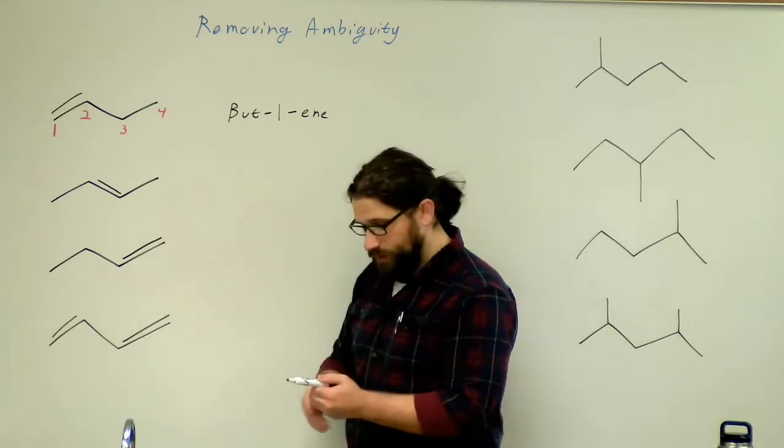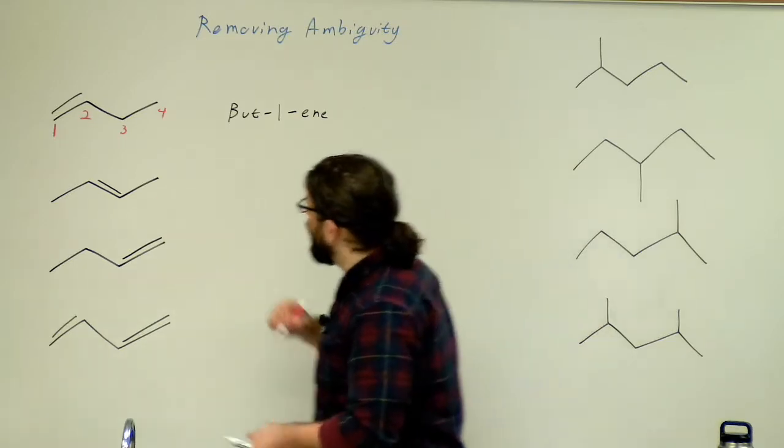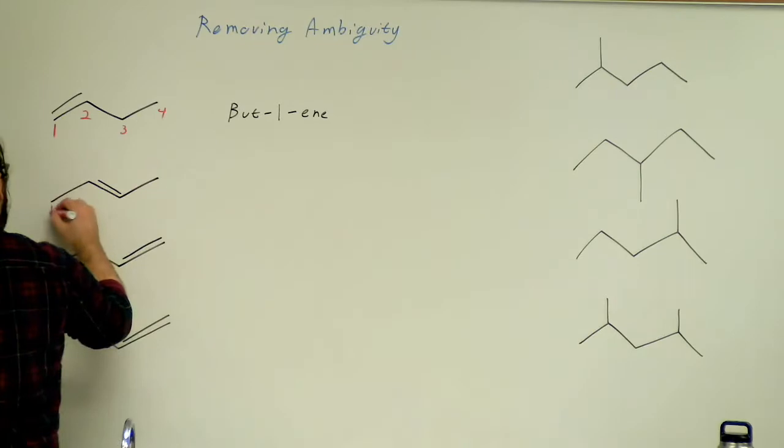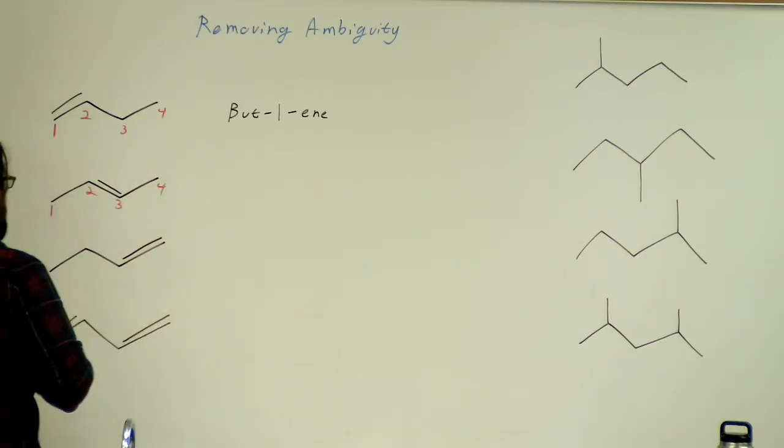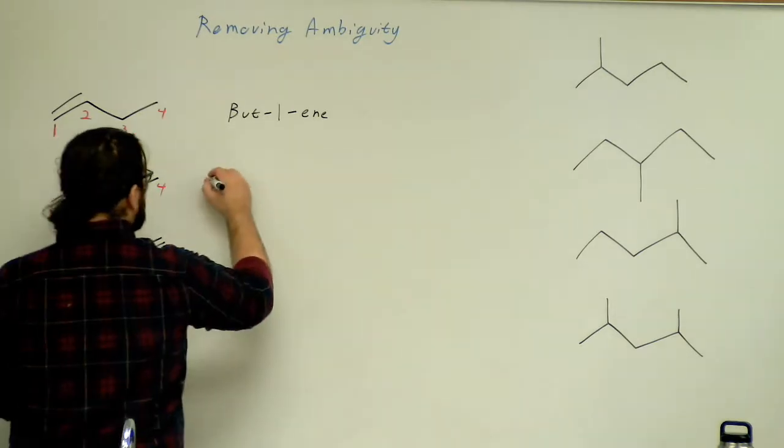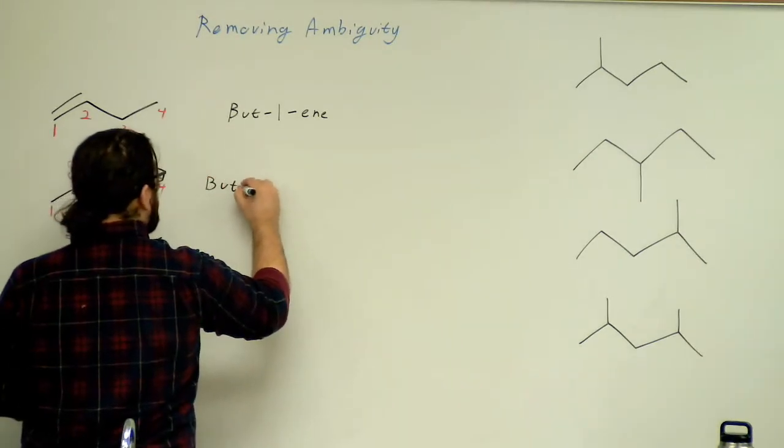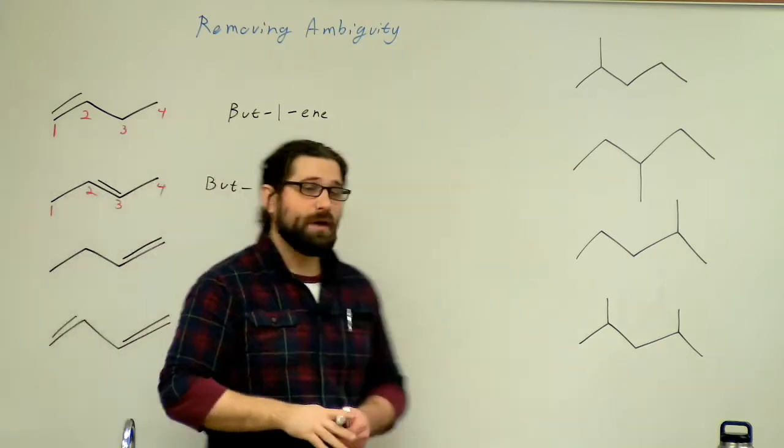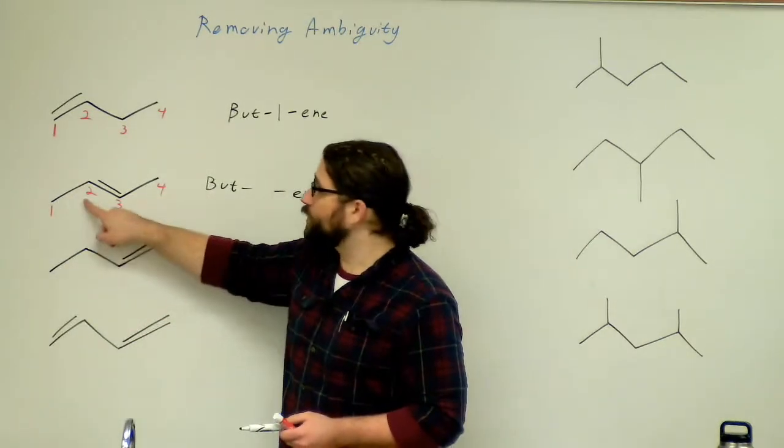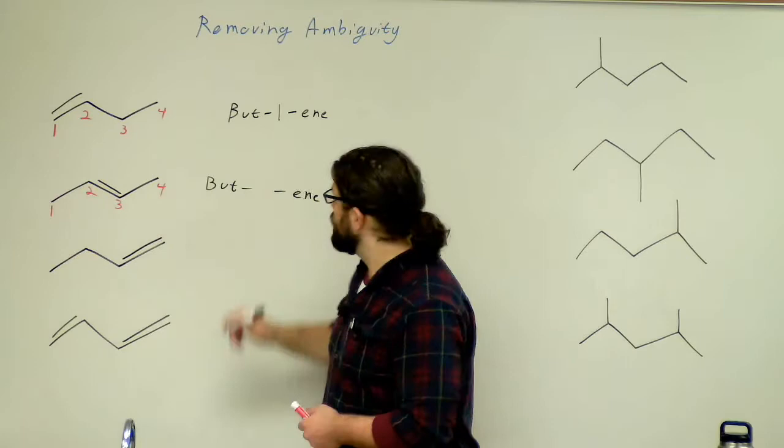How about the next one? Well, how would that be different? I can number it in the same way: one, two, three, and four. And now I have bute, butene again, but this time my double bond starts on carbon number two. So I'm going to say but-2-ene.